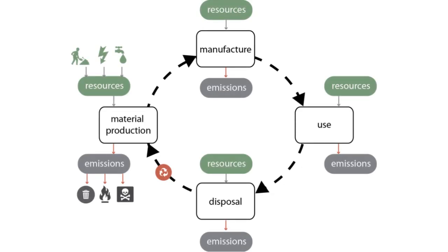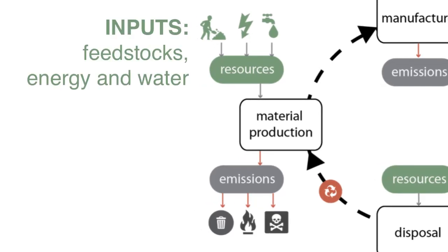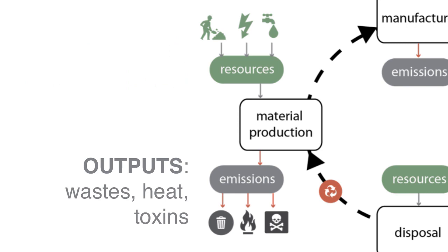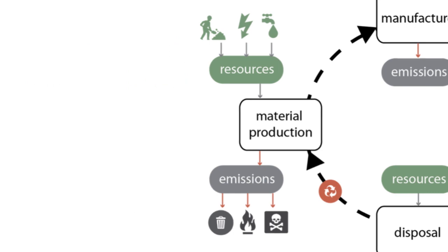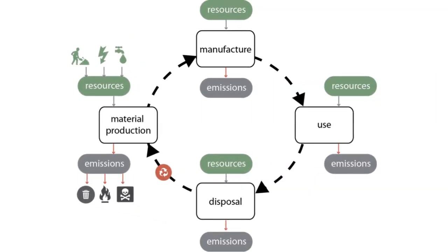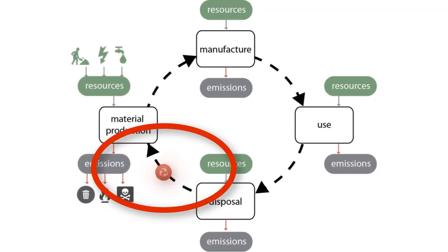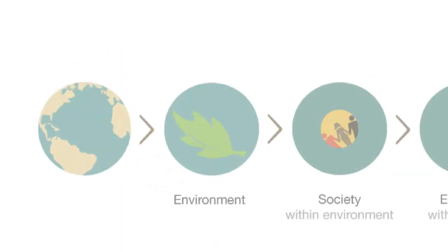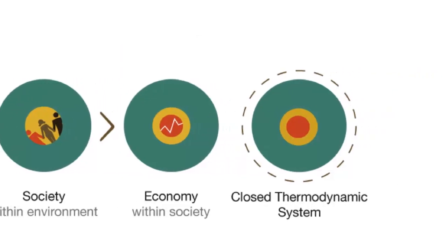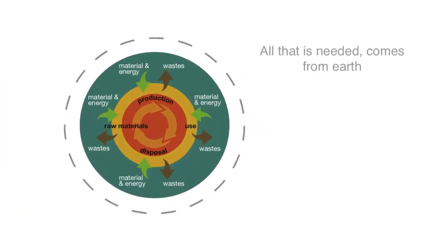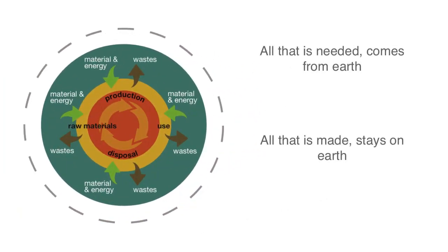Let's take a closer look at the life cycle itself. At each stage of the life cycle, resources, natural feedstocks, energy and water are used, and waste or byproducts, heat and toxins are emitted. For clarity, this detail is only shown on the material production stage. The reddish circle following the disposal phase is meant to indicate a recycle stream. In a closed thermodynamic system of the earth, all of the extraction and emissions take place on earth.